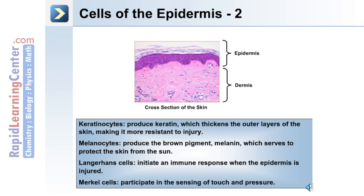Within the epidermis, the keratinocytes produce keratin, which thickens the outer layers and provides the barrier function of the skin. The melanocytes produce melanin, which serves to protect the skin from UV radiation from the sun. Langerhans cells initiate an immune response when the epidermis is injured, and Merkel cells participate in the sensations of touch and pressure.